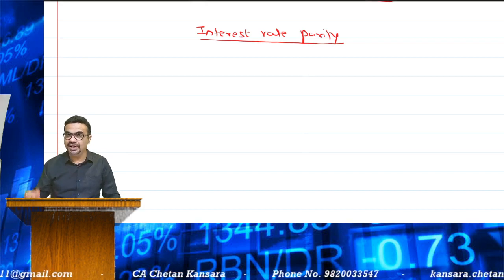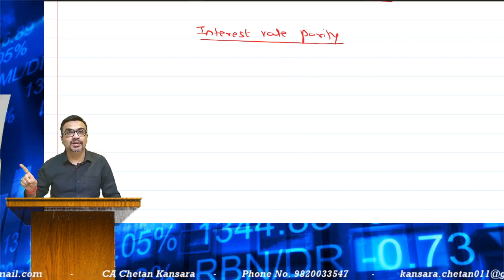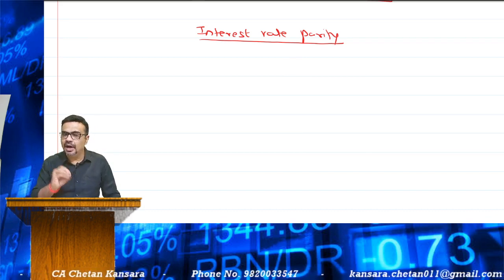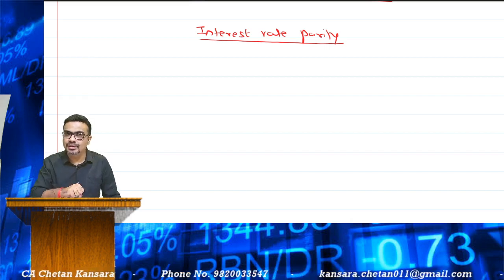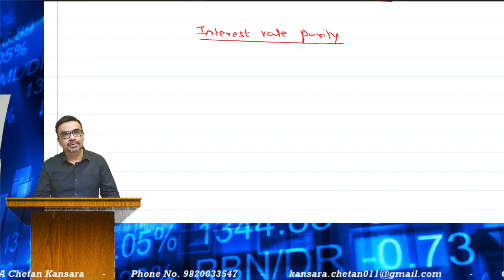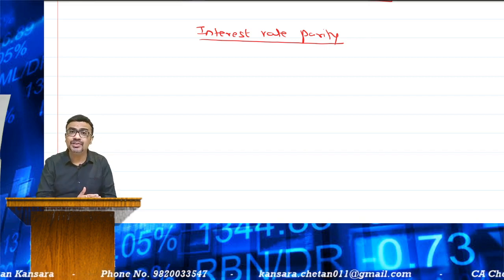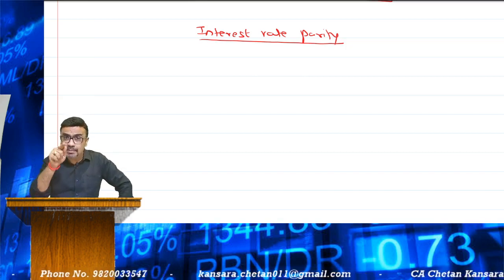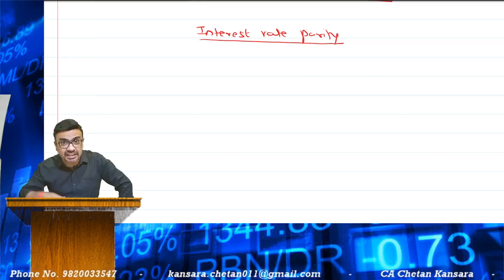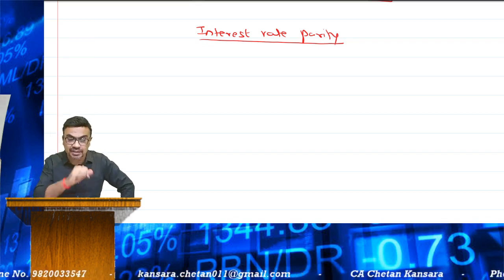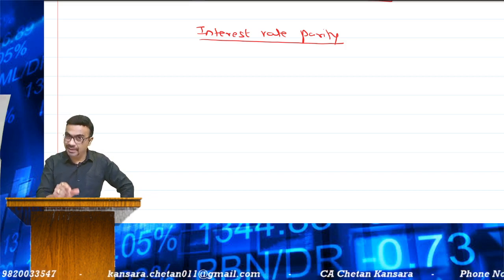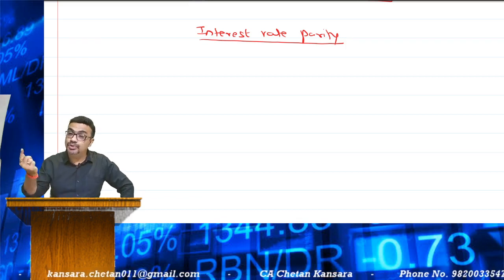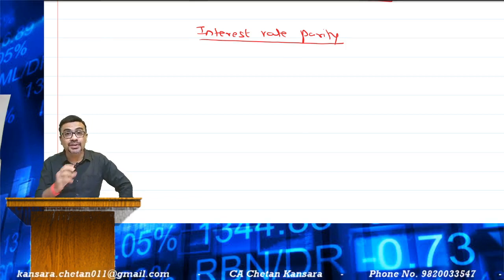By Interest Rate Parity, we are trying to estimate the future spot rate. When you approach a bank and ask for a forward rate, the bank must be doing some calculation. That calculation may be based on inflation - the bank must be considering the inflation and interest rates between the two countries. So Interest Rate Parity is a technique to determine the future spot rate, and based on that, the bank gives forward rates.